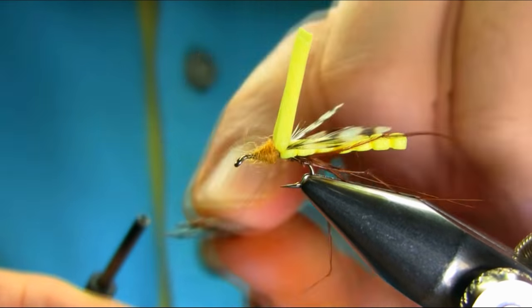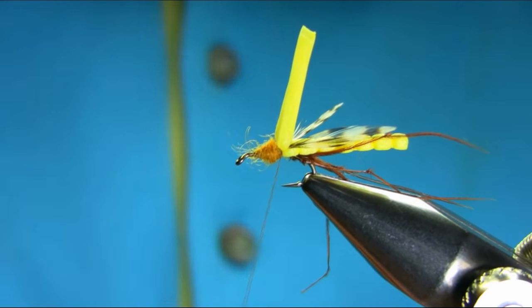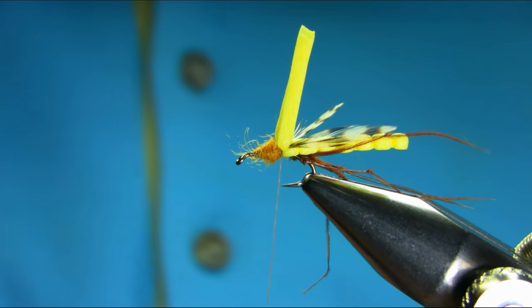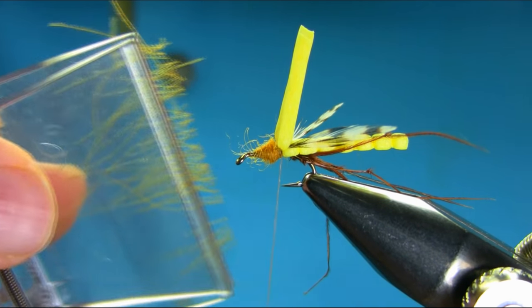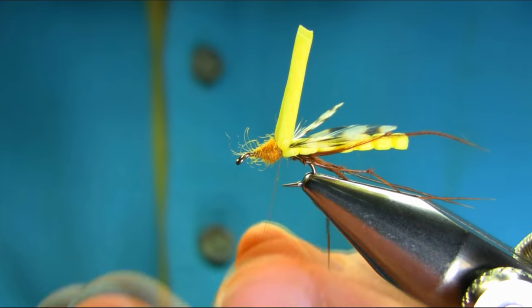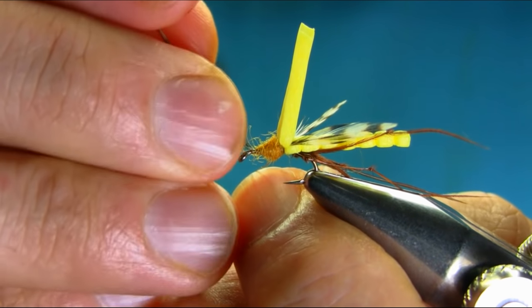A bit more wax here. As you can see, I started from this side and came back over this side. Now I'm going to add some CDC, just a very little. I mean, normally when I tie for myself, I don't use this half goals or anything. I just use legs and body and wings, nothing else.